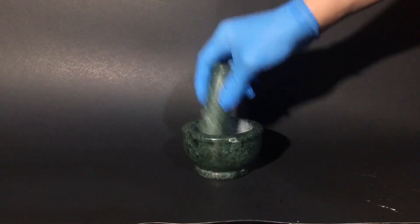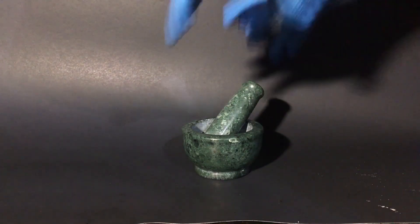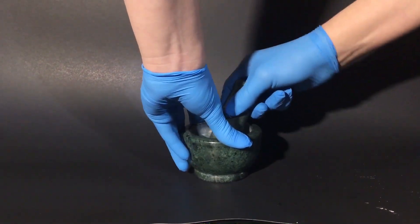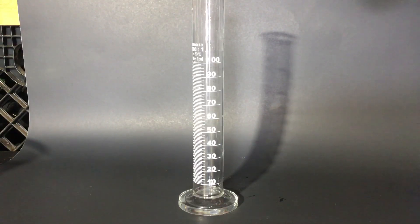Sodium permanganate is the inorganic compound with the formula NaMnO4. It's closely related to the more commonly encountered potassium permanganate, but it's less desirable because it's more expensive to produce.